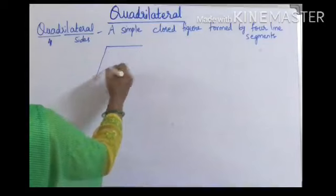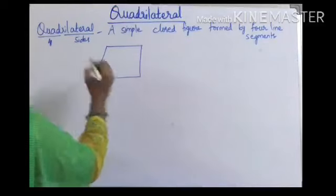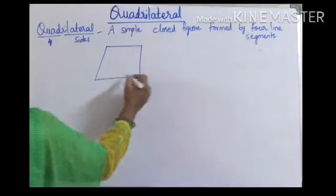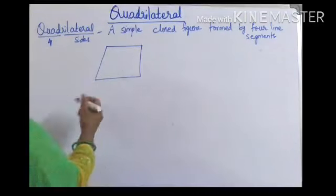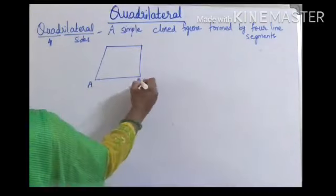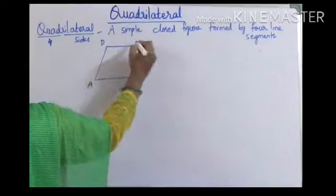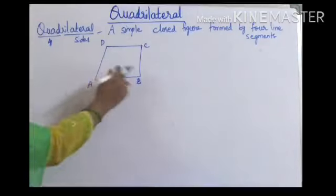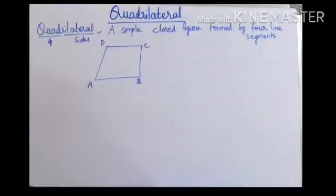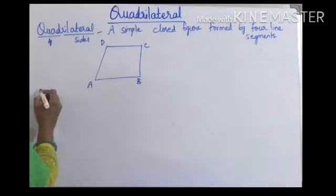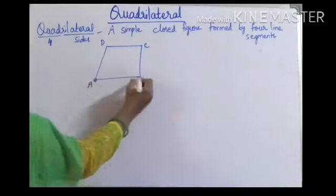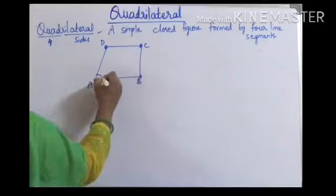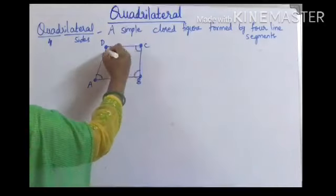So it is having 4 sides and it is a closed figure, isn't it? Now here I will name the figure first — A, B, C, D. So ABCD is a quadrilateral. Like a triangle, here you are having 4 line segments, 4 vertices, and 4 angles.